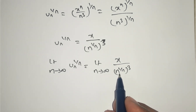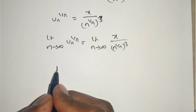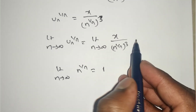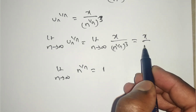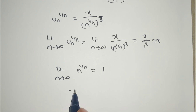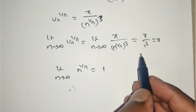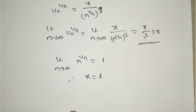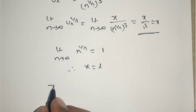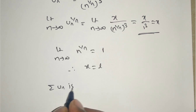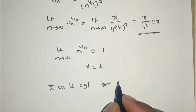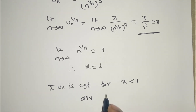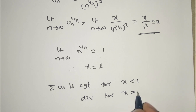Taking the limit as n→∞: using the formula limit n→∞ of n^(1/n) = 1, this becomes x/(1)³ = x. So l = x. By the Cauchy nth root test, Σuₙ is convergent for x < 1 and divergent for x > 1.